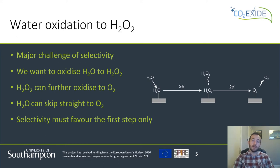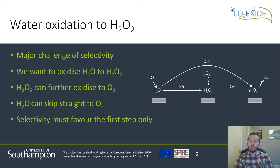A further complication is that a lot of materials can skip these steps altogether and produce oxygen gas directly from water oxidation via a four-electron reaction. When we are thinking about reaction selectivity we want to design a material that favors this initial two-electron water oxidation step, while simultaneously disfavoring the further oxidation of hydrogen peroxide and also the direct four-electron pathway as well.